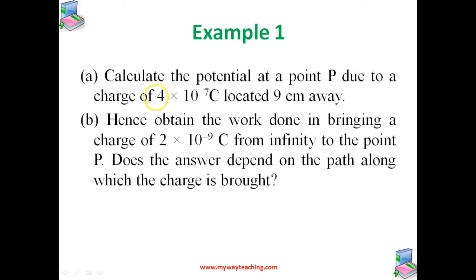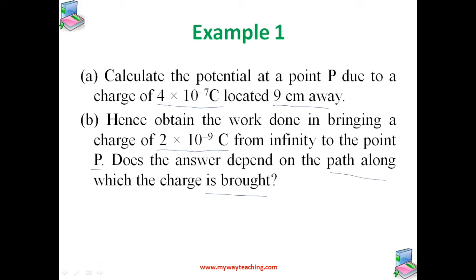Now let us see a simple problem. Calculate the potential at a point p due to a charge of 4 × 10⁻⁷ C located 9 cm away. Hence obtain the work done in bringing a charge of 2 nanocoulombs from infinity to point p. Does the answer depend on the path along which the charge is brought?